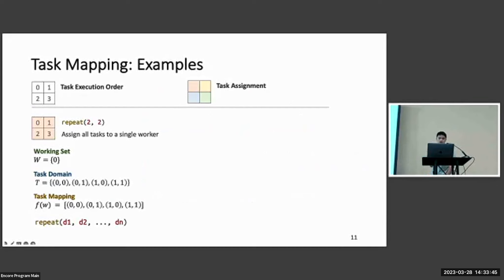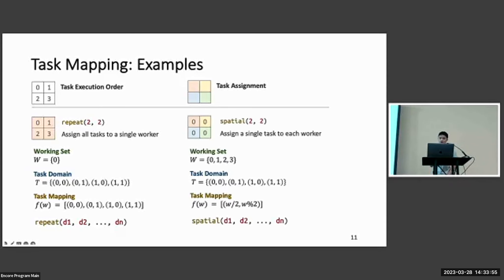The first example is the repeat 2x2 task mapping. It has a single worker and four tasks, and we will assign all the tasks to the same worker. The second task mapping is the spatial 2x2, which has the same number of tasks and workers, and we will assign each worker a single task. And we can generalize this idea to an arbitrary number of dimensions. These two are very essential task mappings that will be used.